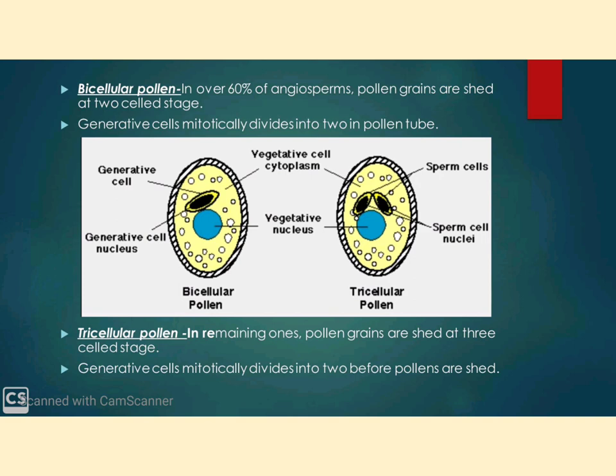In over 60% of angiosperms, pollen grains are shed at the two-celled stage, i.e., vegetative cell and generative cell. But in the remaining species, the generative cell divides mitotically and gives rise to two male gametes before the pollen grains are shed. This stage is known as the three-celled stage. We can thus observe bicellular pollen and tricellular pollen.